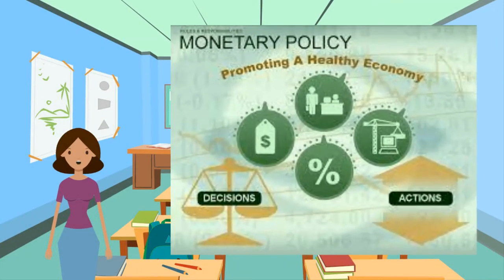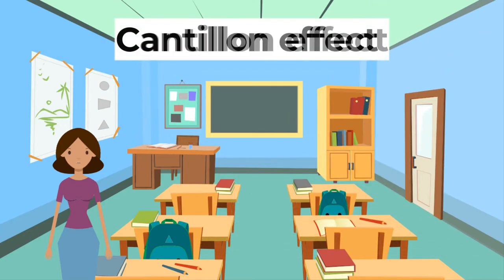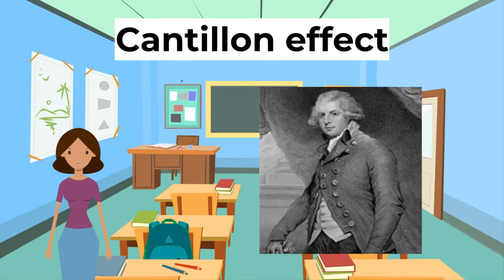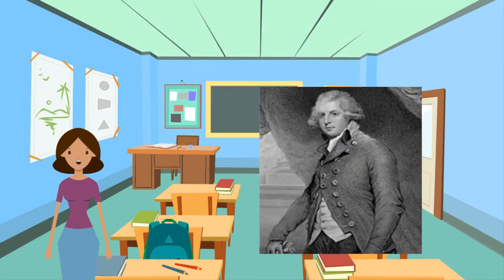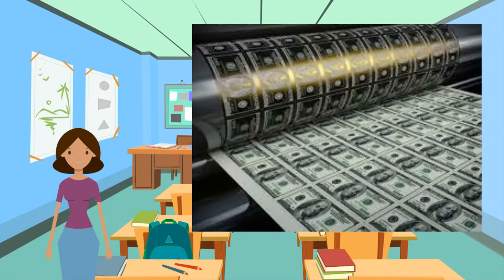Monetary policy and everything concerning it has to be one of the most interesting topics in monetary economics. One interesting concept is the so-called Cantillon effect. Richard Cantillon was an economist in the 18th century who mainly wrote about money and how it circulates around the economy. The Cantillon effect describes the uneven expansion of the money supply when a central bank pumps more money into the economy.